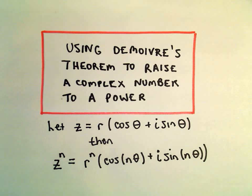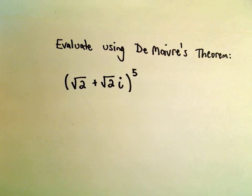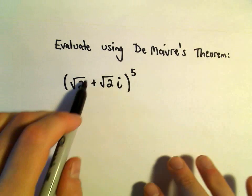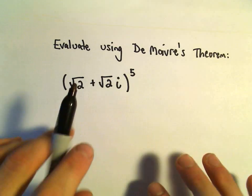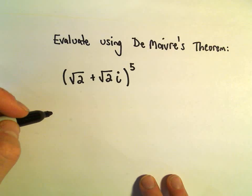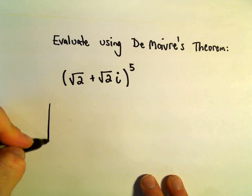Okay, so one more example using De Moivre's Theorem to raise a complex number to a power. And here we've got √2 + √2i all raised to the 5th. You could always just simply distribute this out multiple times, but probably wouldn't want to do that to the 5th power.